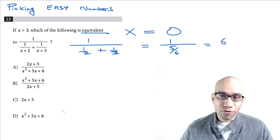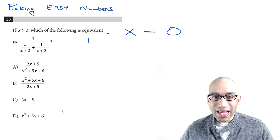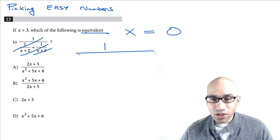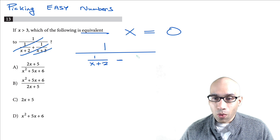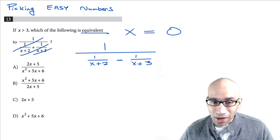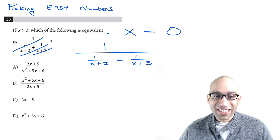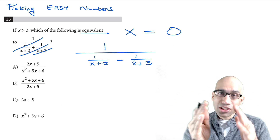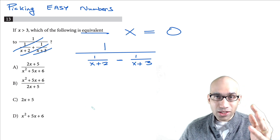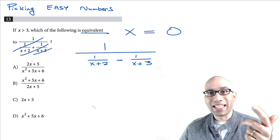Now you try a very similar problem. The new expression is 1 over (x + 2) minus 1 over (x + 3). The answer choices are still the same. Substitute x equal to 0 and post your answer in the comments below. Pause the video for a few seconds and see how quickly you can get the answer.